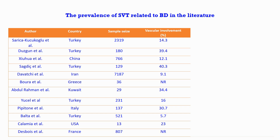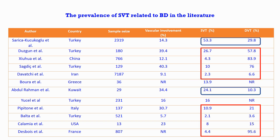Vascular manifestations are occurring in up to 30% of patients. Our team has reported a prevalence rate of 30%. The majority of studies have shown a more frequent occurrence of DVT over SVT.